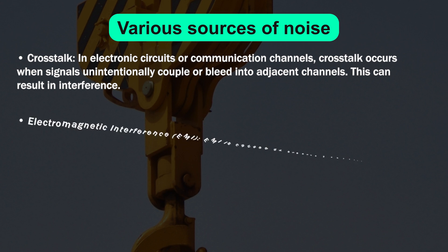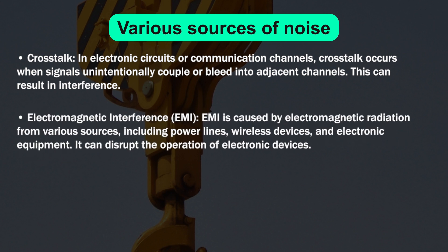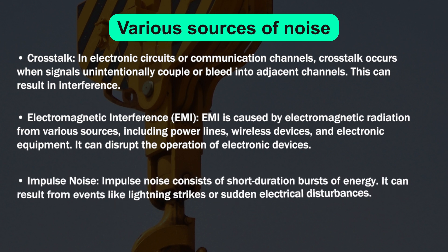The next point is electromagnetic interference, or EMI. EMI is caused by electromagnetic radiation from various sources including power lines, wireless devices, and electronic equipment, and can disturb the operation of electronic devices. The next point is impulse noise, which consists of short duration bursts of energy and can result from events like lightning or sudden electrical disturbances.